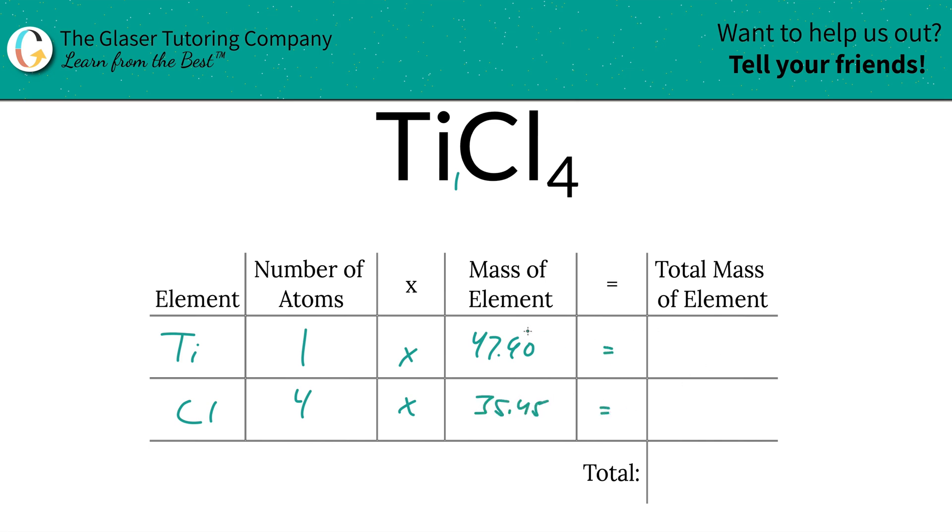And then we're going to find the total mass of the element by simply multiplying this row across. So the total mass of titanium in the compound is going to be 47.90 units of mass, and chlorine is going to be roughly 140... I think it's 141.8, right? Yeah, okay.